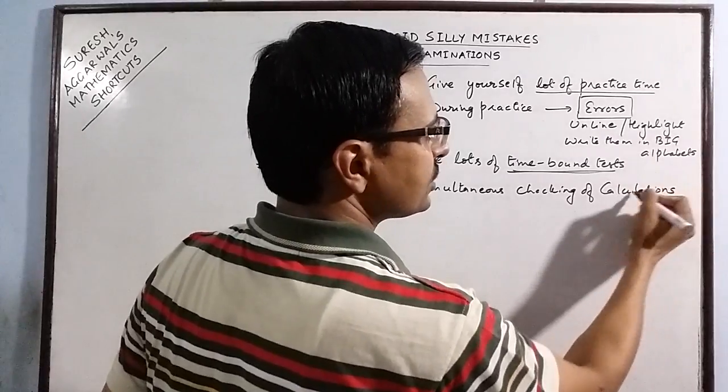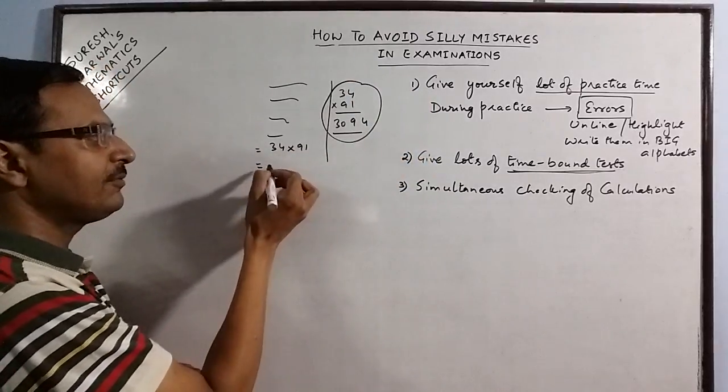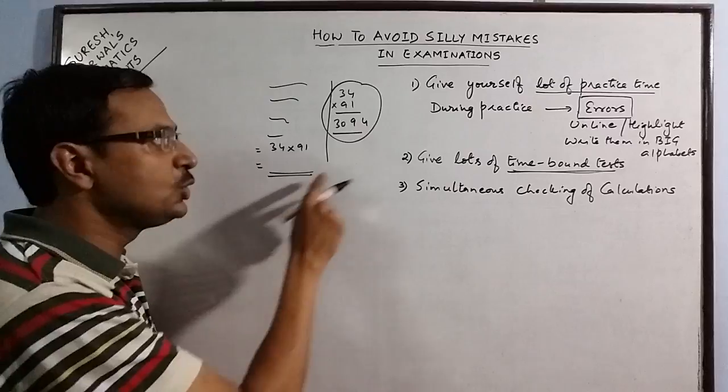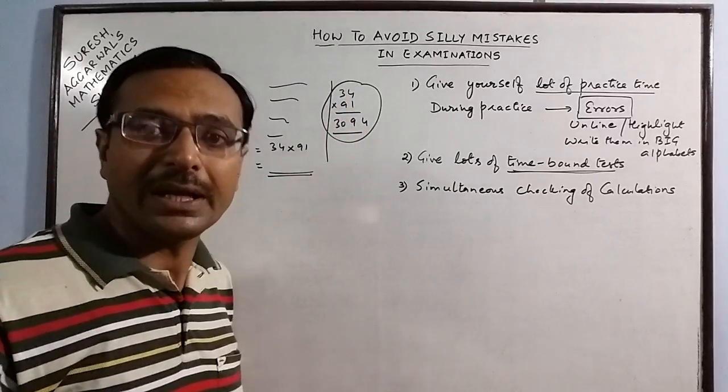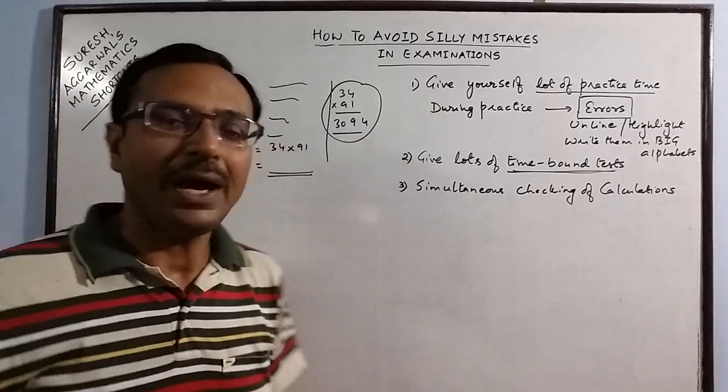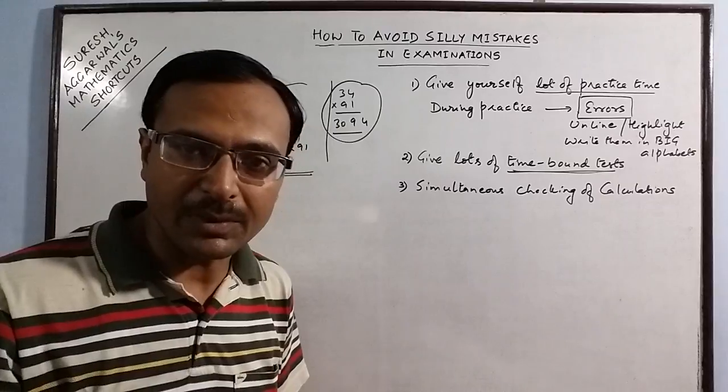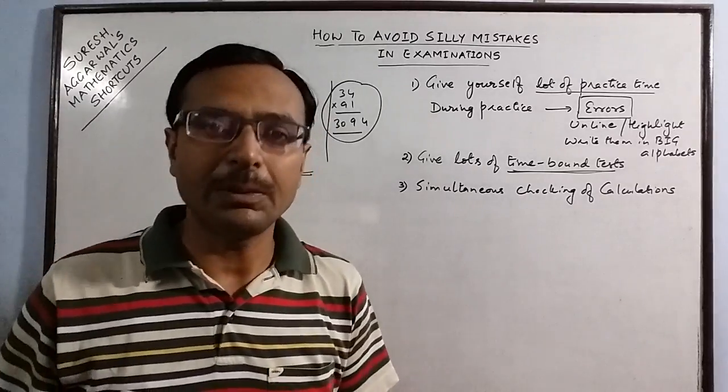This checking of calculations have to be done simultaneously along with the attempt. That is simultaneous checking of calculations. Whenever you do a calculation in the rough work, this calculation before writing the answer in the fair part you have to check it then and there second time. So all calculations which you do have to be checked then and there simultaneously along with the attempt. You cannot check all calculations in the last 5 to 10 minutes of the paper.